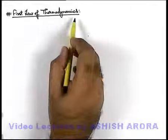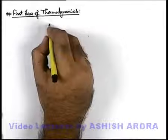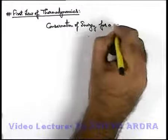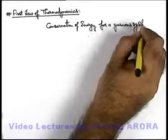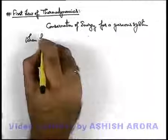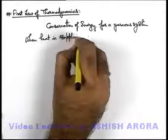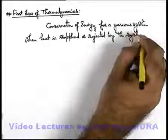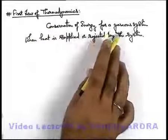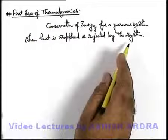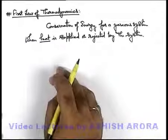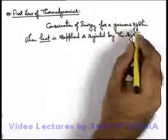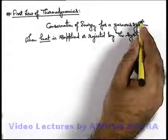Now we'll discuss the first law of thermodynamics. This is basically the conservation of energy for a gaseous system. When heat is supplied or ejected by the system, we apply the first law. It can also be applied in cases where neither heat is supplied nor rejected. In this section we'll restrict ourselves to the first law of thermodynamics for a gaseous system, though it can be applied in many other cases.